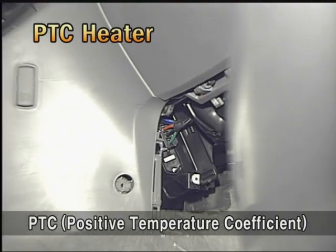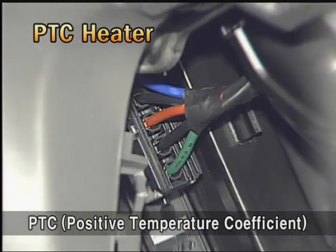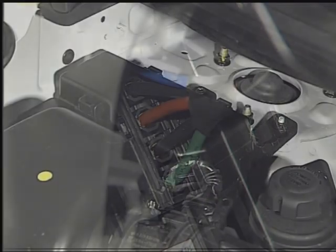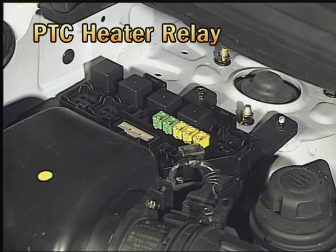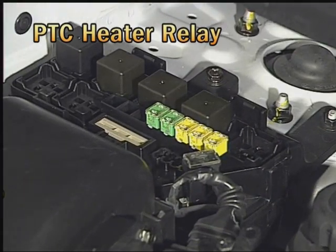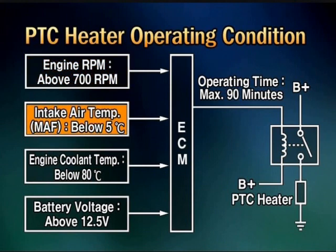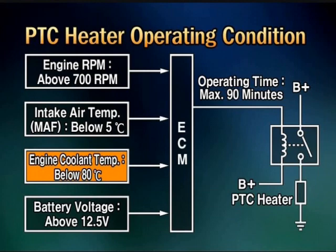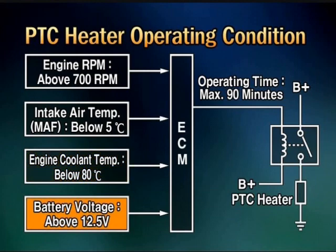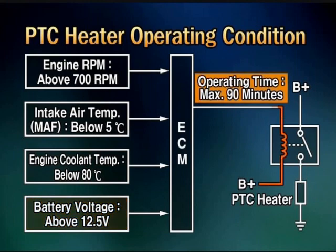The PTC — positive temperature coefficient — heater is applied to the diesel engine. The relay is located in the engine room. The operating conditions are as follows: engine RPM over 700, intake air temperature less than 5 degrees Celsius, coolant temperature less than 80 degrees Celsius, and battery voltage over 12.5 volts. The PTC heater will work for 90 minutes or more.